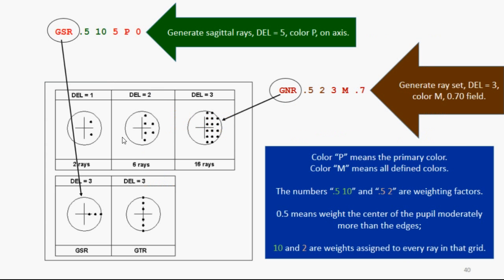Let's explain the GSR and GNR requests. Look in the manual, this is how they're defined. GSR generate sagittal rays. There are two weighting factors, a grid number and the color is the primary color P. That means the GSR is a grid of rays just in the sagittal fan, in this case five rays. The GNR is to generate ray sets, which works over both X and Y. There's some weighting factors here. I said a grid of three, multicolor, so it'll do all the defined colors, and the 7 tenths field.